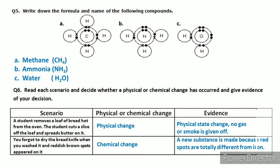Scenario two: you bought a knife and washed it, but forgot to dry it. After some time, when you look at it, there are reddish-brown spots on it. Now tell us — is this a chemical change or a physical change? In chemical change, a new substance is formed. Your knife was silver colored, but now it has red spots — a completely new substance has formed. So this is a chemical change. Evidence: a new substance (rust) has been made because the red spots are totally different from iron.